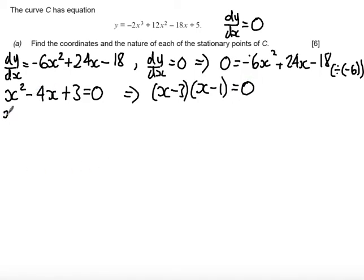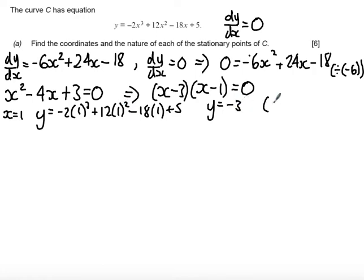So first of all using x equals 1, substituting into my equation for my curve to get my point. I get y equals minus 2 times 1 cubed plus 12 times 1 squared minus 18 times 1 plus 5. And so working through this we get y is equal to 12 plus 5 is 17, minus 2 plus minus 18 is minus 20. So 17 minus 20 is minus 3. And one of my coordinates is 1, minus 3.